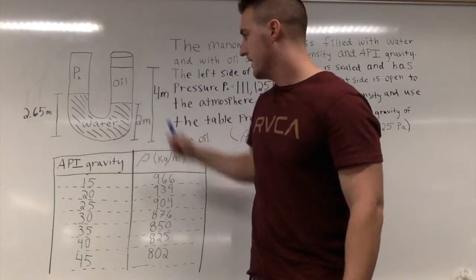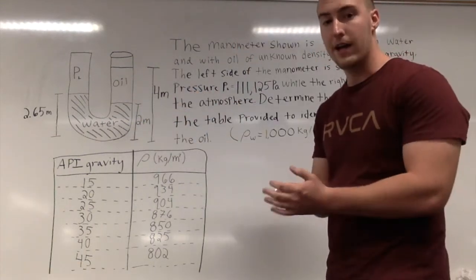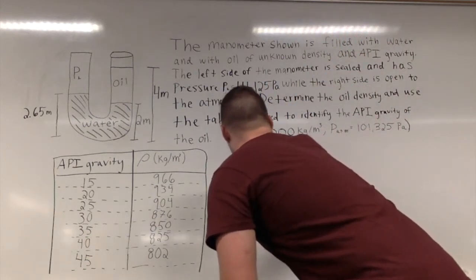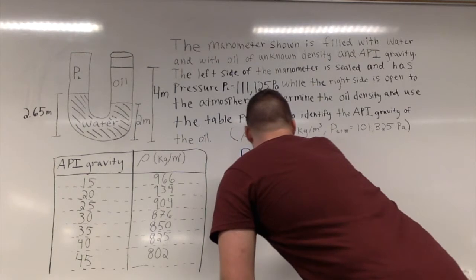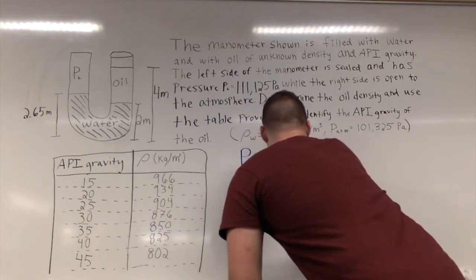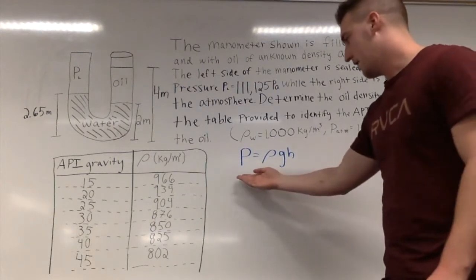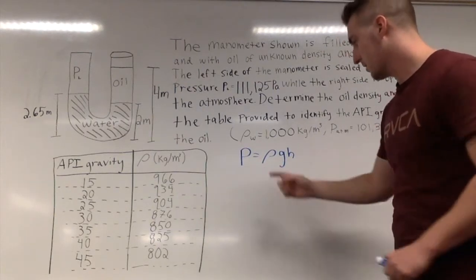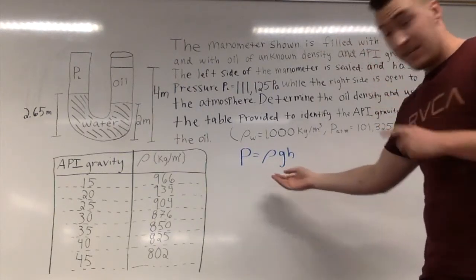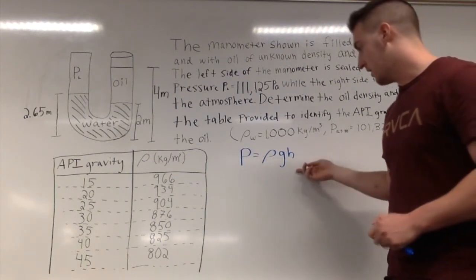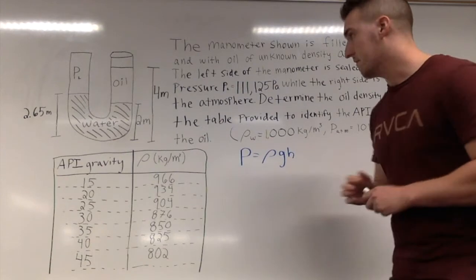The way we write hydrostatic pressure is P equals ρgh, and that means the hydrostatic pressure is equal to the density of the fluid times gravity multiplied by the height of the fluid.